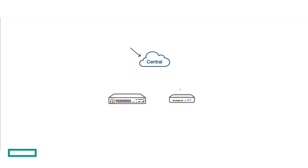One-touch provisioning generally means that you have to get onto the console, do some manual configuration to get that IP address configured, and then you connect into, let's say, an MPLS circuit, and then that has an internet drop from that MPLS circuit out, and then it goes up to Aruba Central and grabs its final configuration. Now let's talk about the nuances of ZTP and one-touch provisioning on the gateways.